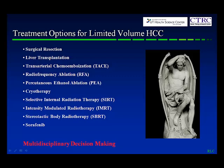When someone has limited volume hepatocellular carcinoma, there are a number of treatment options: surgical resection, liver transplantation, local injection of chemotherapy via catheter through the groin by the interventional radiologist — TACE is one way — radiofrequency ablation usually percutaneously where a needle is placed through the body wall into the tumor with microwave heating, essentially cooking the tumor. You can also do injections of alcohol, cryotherapy, selective internal radiation therapy or SIRT using things like yttrium, intensity modulated radiotherapy, stereotactic body radiotherapy, or treatment with chemotherapy such as sorafenib.